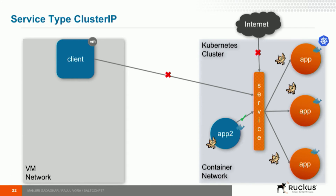To answer the accessibility question, we look at the service type ClusterIP, which is the basic building block in Kubernetes service discovery. What that gives us is access within the container network, also known as the cluster network. For example, by creating that type of service, app two can now talk to all the other apps. But it does not give access from the internet, and it does not give access from a VM — which is our problem statement.